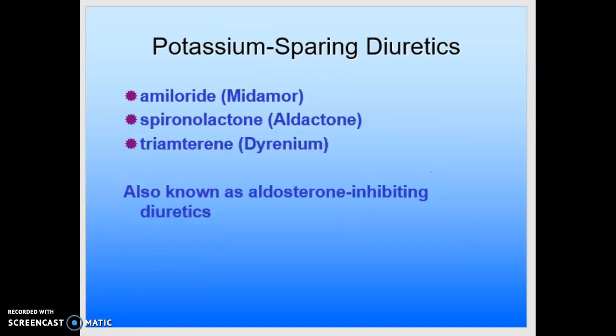As we move across our concept map, we come to the potassium-sparing diuretics, also known as aldosterone-inhibiting diuretics. The potassium-sparing diuretics are typically not given alone because of their limited ability to increase urinary sodium excretion. Their major use is in combination with other diuretics, or sometimes we'll use spironolactone for other purposes such as polycystic ovarian syndrome or hirsutism.